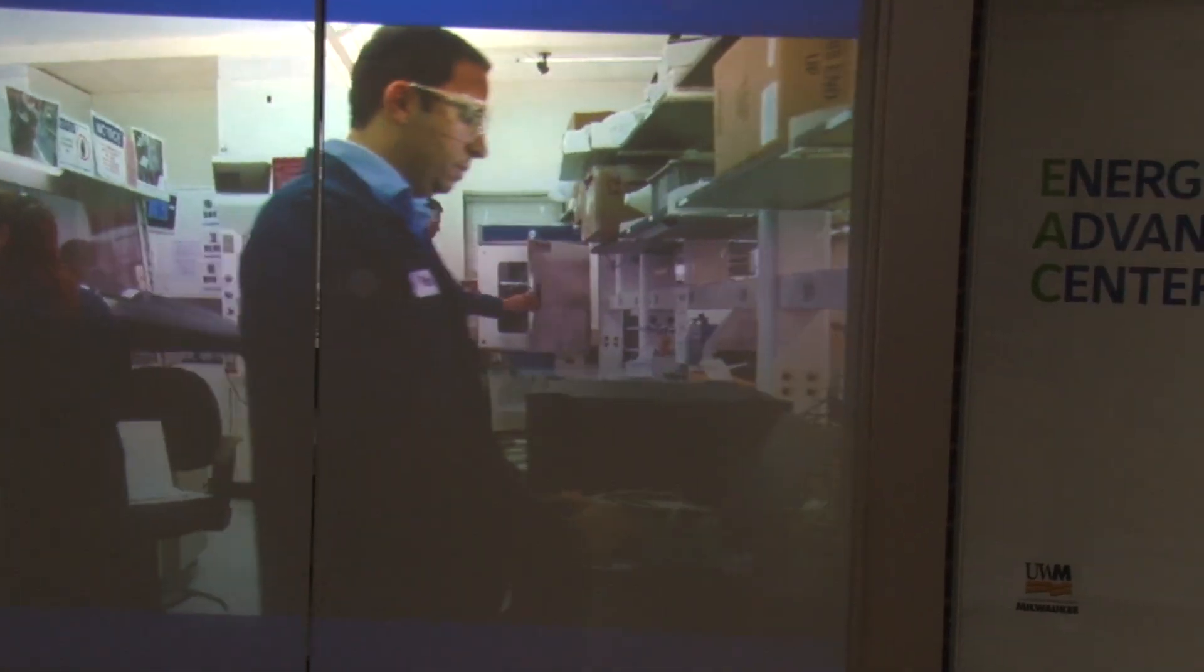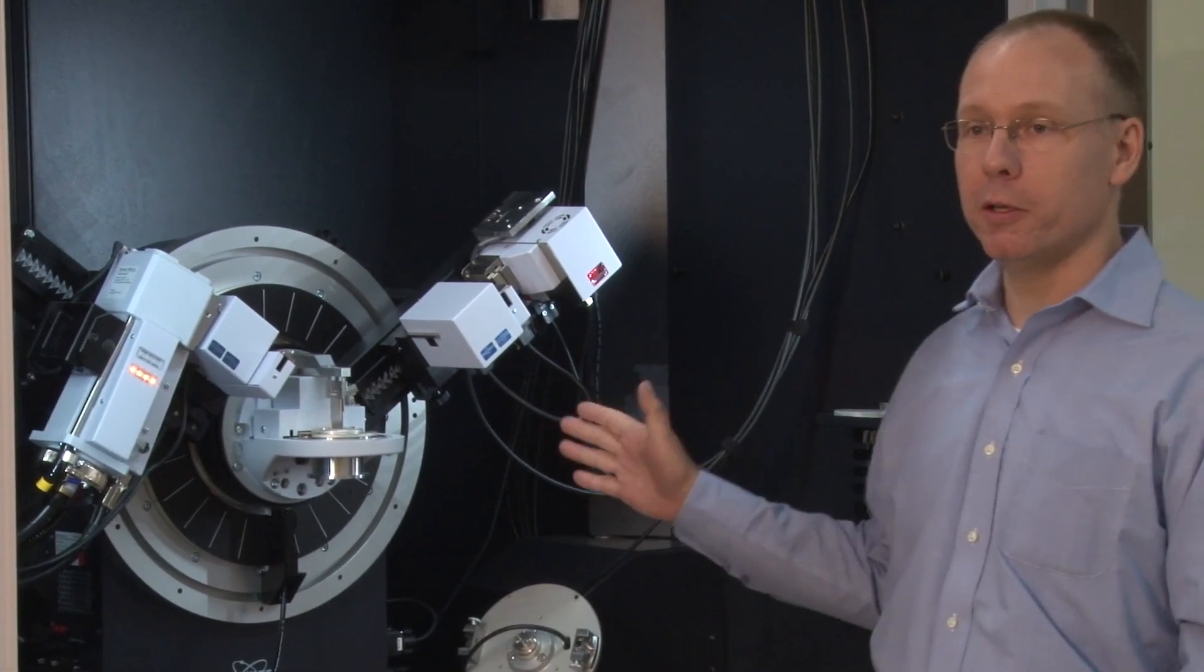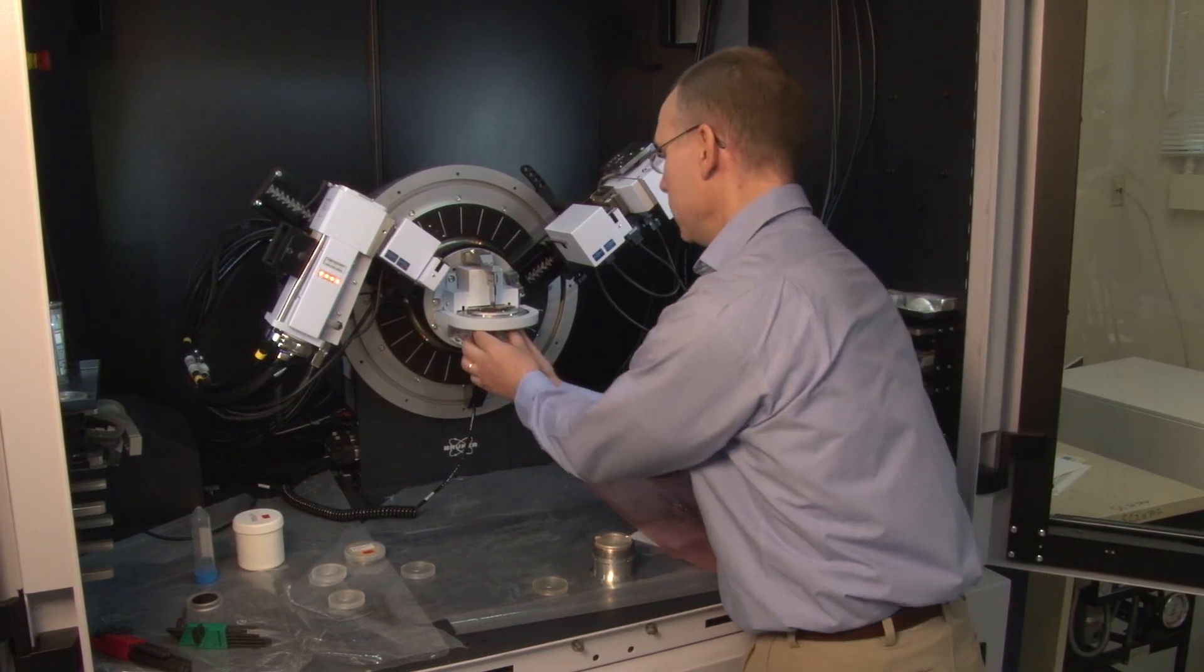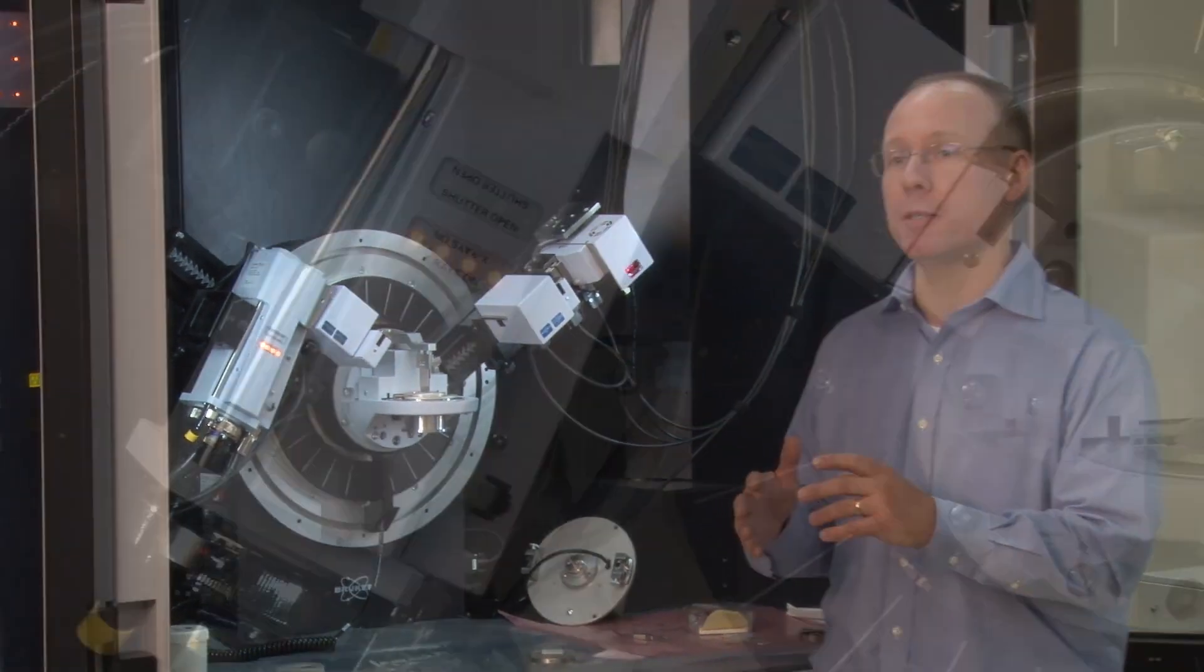As part of the program, our students actually get a lot of hands-on laboratory exposure. Material science and engineering is definitely a hands-on type of discipline. This machine is called an X-ray diffractometer. This machine actually lets us study things that are on the scale of atoms and how atoms pack and arrange themselves in three-dimensional crystalline structures.